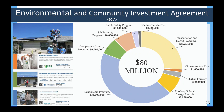We also have an environmental and community investment agreement with Chevron. About 10 years ago, Chevron invested about $80 million with the city and various programs. The major breakdown: about $35 million is invested in the Richmond Promise Scholarship Program for local college-bound students. Additionally, there's a Competitive Grant Program for about $6 million, Job Training Program for $6 million, Public Safety Program for about $2 million, Free Internet Access for $1 million, Transportation Transit Program for about $20 million, Climate Action Plan for about $1 million, Urban Forestry for $2 million, and Rooftop Solar and Energy Retrofit for about $6.2 million.